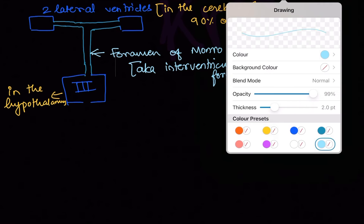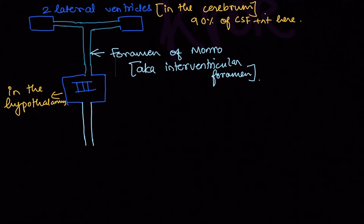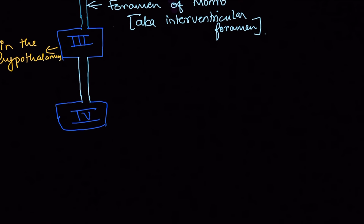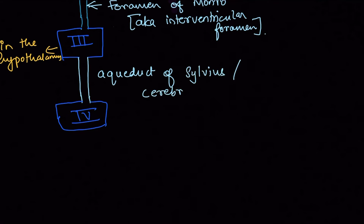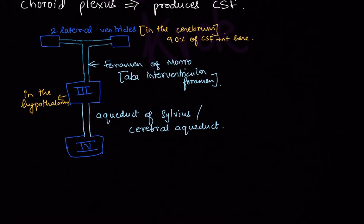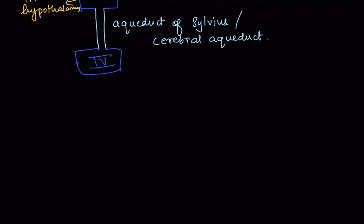From the third ventricle, CSF flows into the fourth ventricle through a duct called the aqueduct of Silvius, also known as the cerebral aqueduct. The fourth ventricle has two routes for drainage.